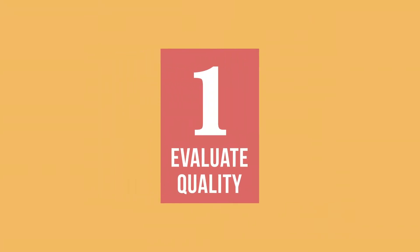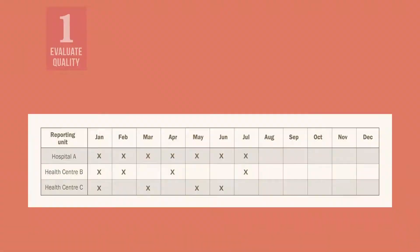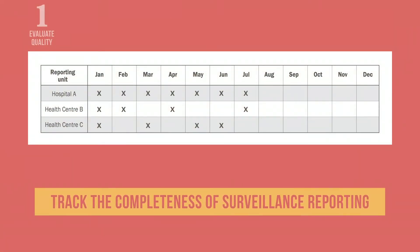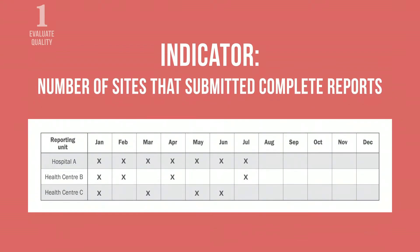Let us look at how indicators can be used to evaluate the overall quality of surveillance reporting. District medical officers and surveillance officers should routinely track the completeness of surveillance reporting from every health facility or sentinel site. They might use a table like this to track each reporting site and the number of sites that submitted complete reports for each reporting period.